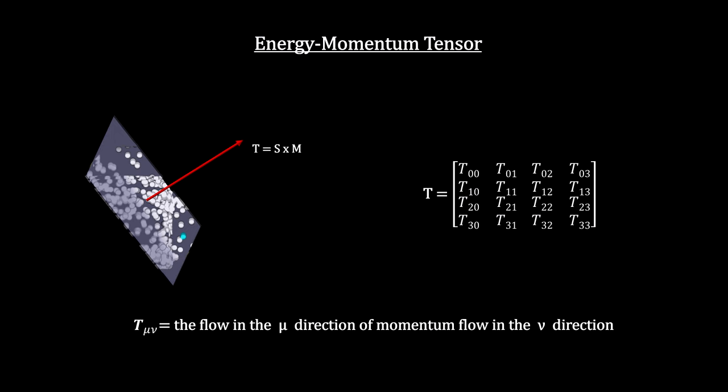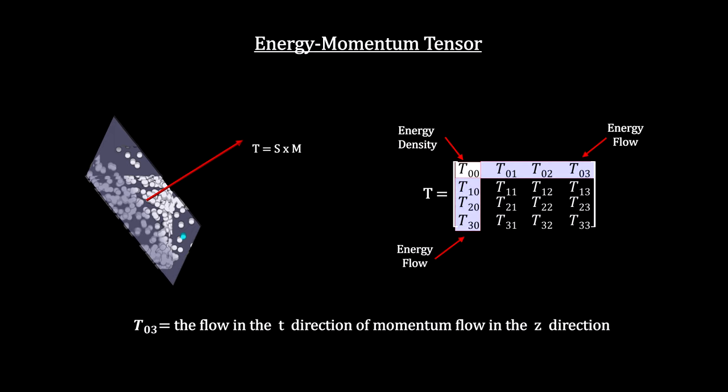Each element represents the flow of momentum across a surface. The first component represents classical energy density at a constant time. This was the only component used in Newton's equations. Similarly, the rest of the top row and left column is the energy flow across each surface.